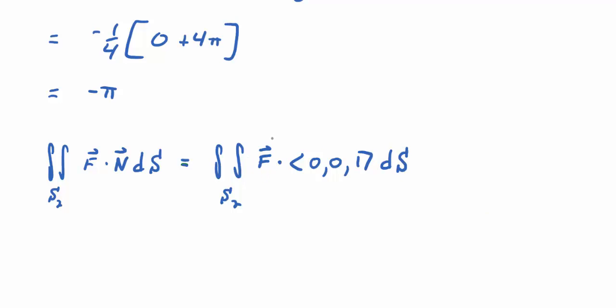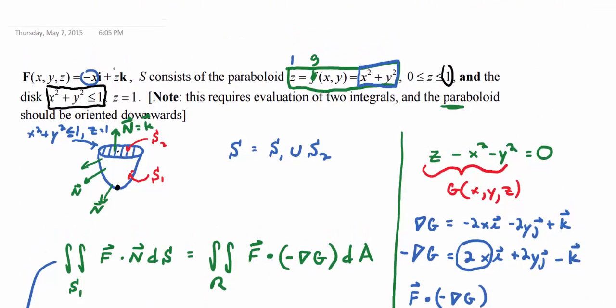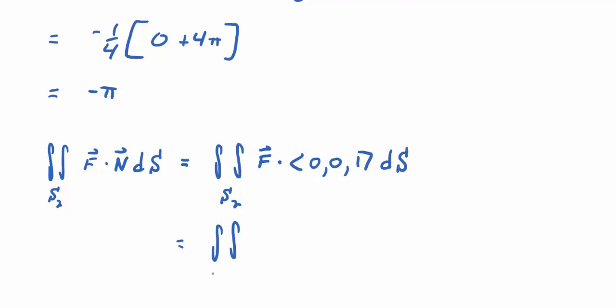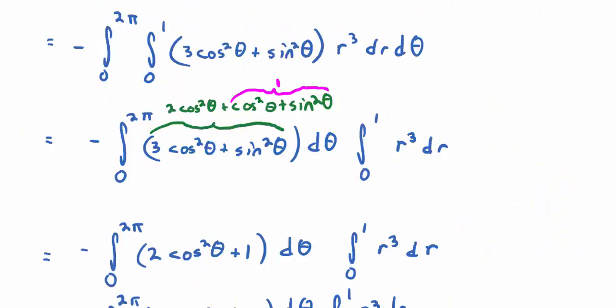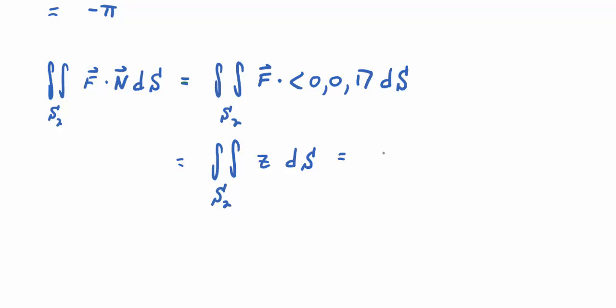So I'm not even going to use the del G formula here. I'm going to rewrite this as the integral over S2 of F dot K, which is the vector 0, 0, 1 if I use component form, dS. But then I know that if I dot F with 0, 0, 1, the only thing that survives is the Z component or the K component of F, which happens to be Z. So you get that that's equal to the integral over S2 of just Z dS. But what's the value of Z on that surface? Z on that surface is 1.